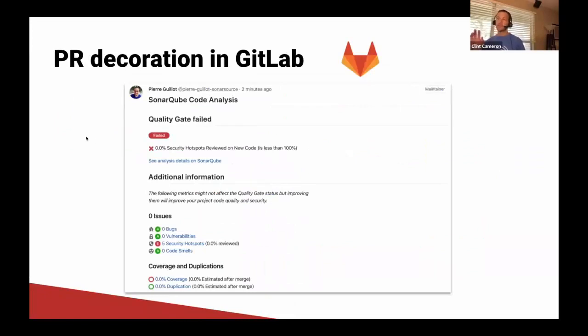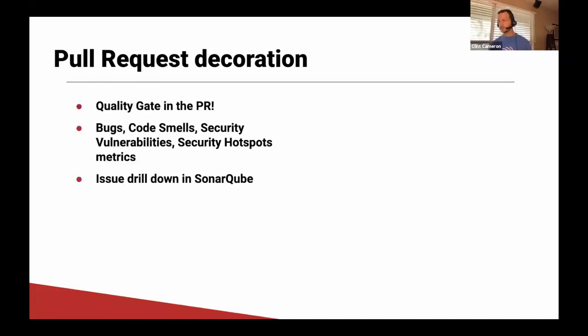In GitLab, there's a failed quality gate due to five unreviewed security hotspots. We're bringing a consistent, valuable feature set for all of the ALMs with every pull request — giving you a clear quality gate in the pull request, as well as detection of bugs, code smells, and vulnerabilities.